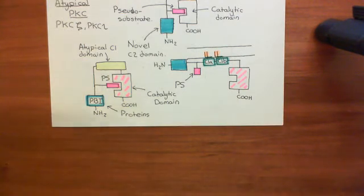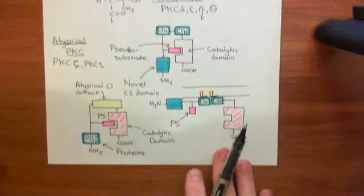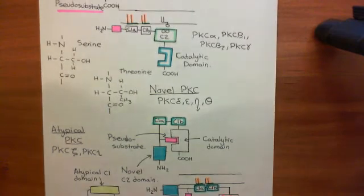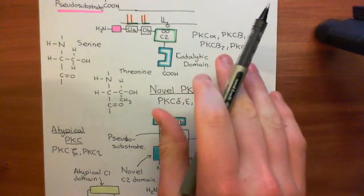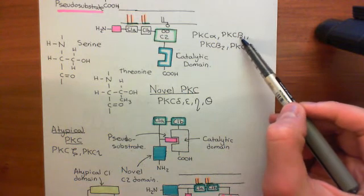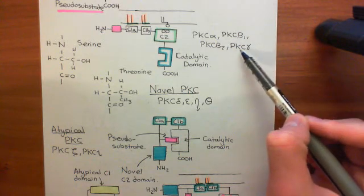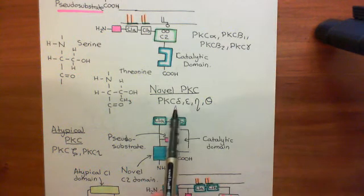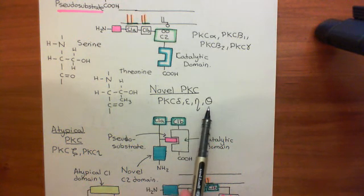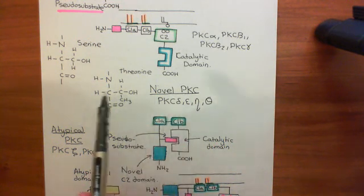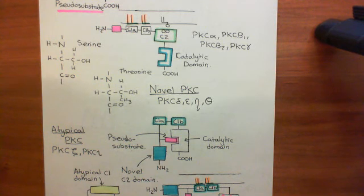That now concludes our discussion of the protein kinase C pathway. The pathway we've discussed will lead to the activation of both the conventional protein kinase C enzymes — protein kinase C alpha, beta 1, beta 2, and gamma — and also the novel protein kinase Cs: protein kinase C delta, epsilon, eta, and theta. These will phosphorylate serine and threonine residues on an entire plethora of targets.